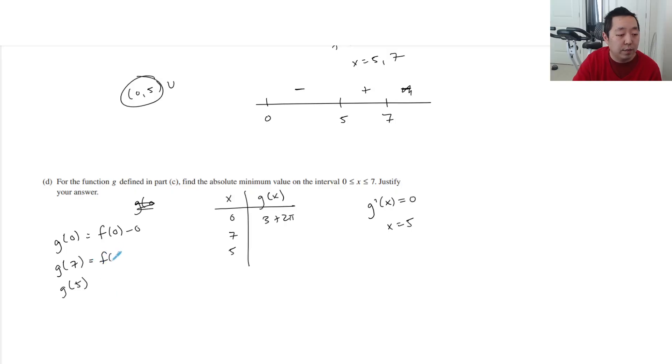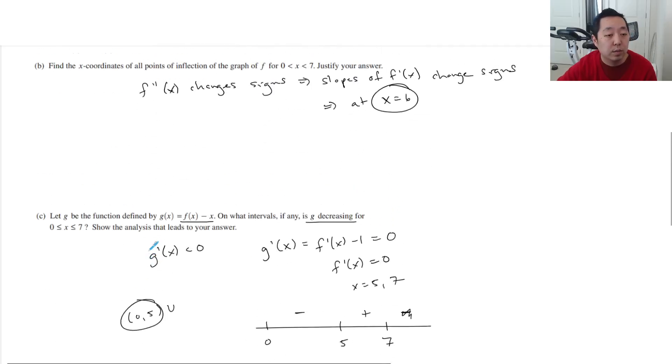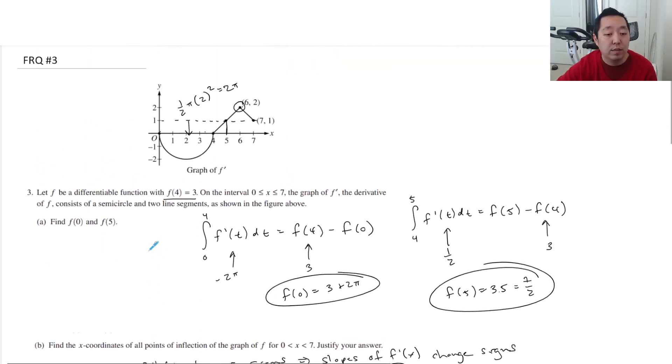g of 7 is f of 7 minus 7. So let's see what f of 7 is. We did not find f of 7. So to find f of 7, I would integrate from 4 to 7 of f prime of t dt. That would equal f of 7 minus f of 4. So the integral from 4 to 7, that's this area here. I'm going to make it this triangle. It's a 2 by 2 triangle. So that area there is 4, half of 4 is 2. So that area is 2. And what is this area? It's that trapezoid. Or you can make it into a triangle and a square. But it's 1, 2, so average is 3 halves, 3 halves times 1. That area is 3 halves.